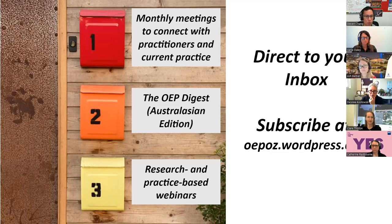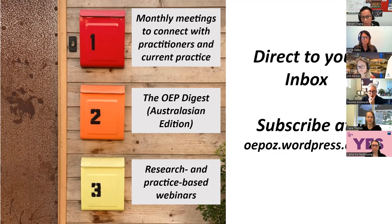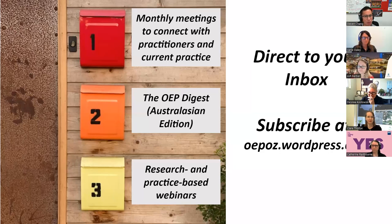Apart from our webinars, we meet once a month to connect with each other, share our current practices, how we're tackling different problems, and share resources — that's sort of like a working meeting. And once a month we put out the OEP Digest, which is a 360-degree wrap of all things open education in Australasia, including the newest open textbooks fresh off the press. You can get this emailed straight to your inbox by signing up on our website.